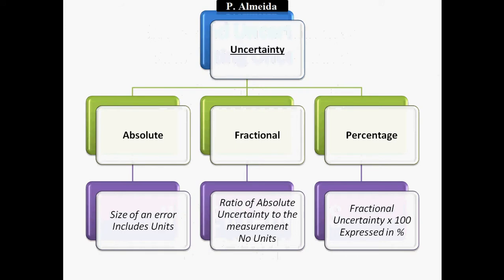So uncertainties - you can have mainly three types. You can have the absolute one, the fractional one, or the percentage one. The absolute one is the size of an error, simply the range between the value that you measured and the true value or the mean if you don't have the true value. And because it's just that difference, it includes units of the thing that you're measuring. If it's volume, it's going to be liters or decimeters cubed, if it's lengths, it's going to be meters.